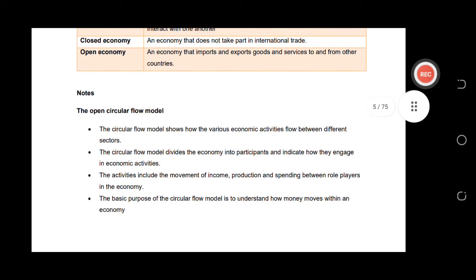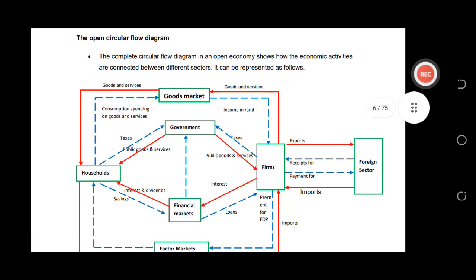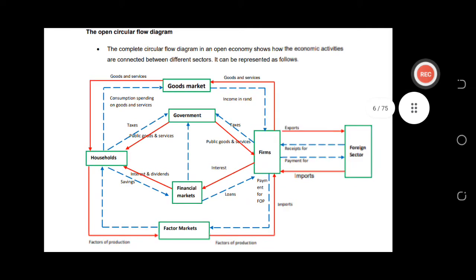For an open economy you don't have to ignore international trade. The open circular flow model shows how the various economic activities flow between the different sectors — how the flow of money works. Let's go to our diagram — the open circular flow diagram. On this diagram we have four sectors: government, household, financial market, and firm. The financial market can be a bank, for example.